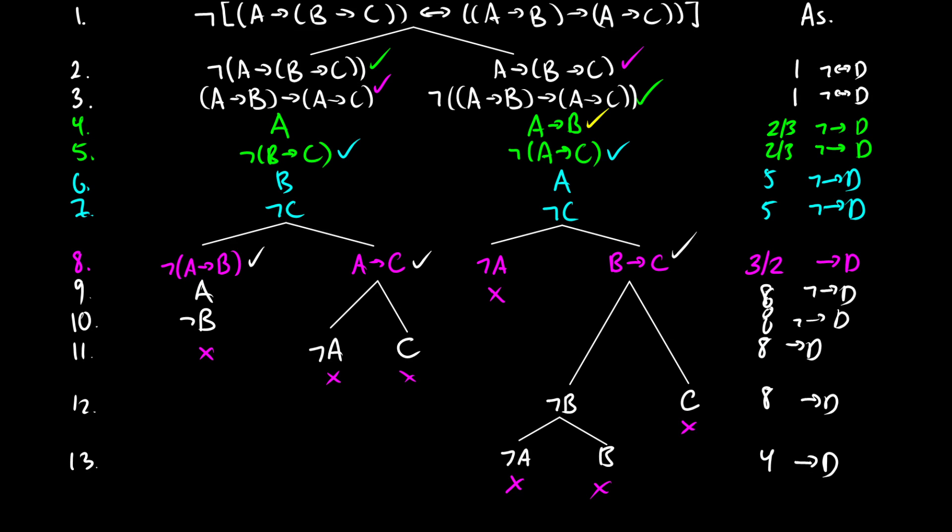Every single branch has now closed, which means we have a contradiction. The set of wffs we had were all inconsistent — we only had one wff at the top, and we wanted to prove it was a contradiction, so we know this is a contradiction. Anyways, that's it for these exercises. The more operators you have in your wff, the longer the tree is going to get. It's just about going through things systematically and making sure all your rules are correct — as long as you do that you will always come out to a nice solution. If you have any questions feel free to leave them in the comments below.